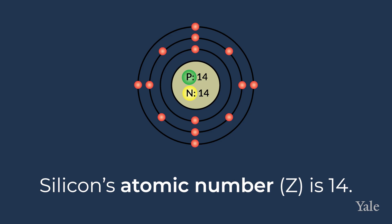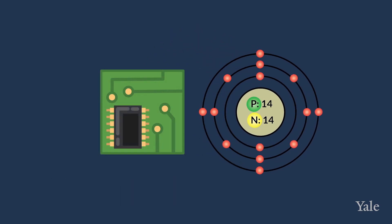Atomic number is abbreviated to Z, so you can say silicon Z is 14. No matter what silicon chip or piece of silicon you find, each atom composing it will have exactly 14 protons. If an atom has 15 protons, it is not silicon — it would be a phosphorus atom. And if an atom has 13 protons, it would be an aluminum atom.